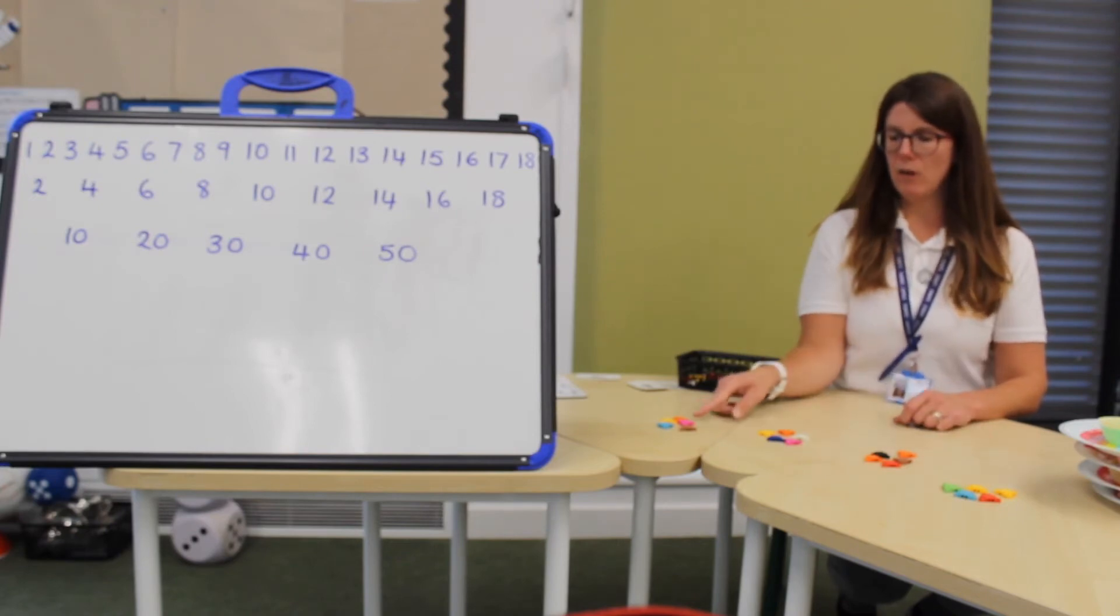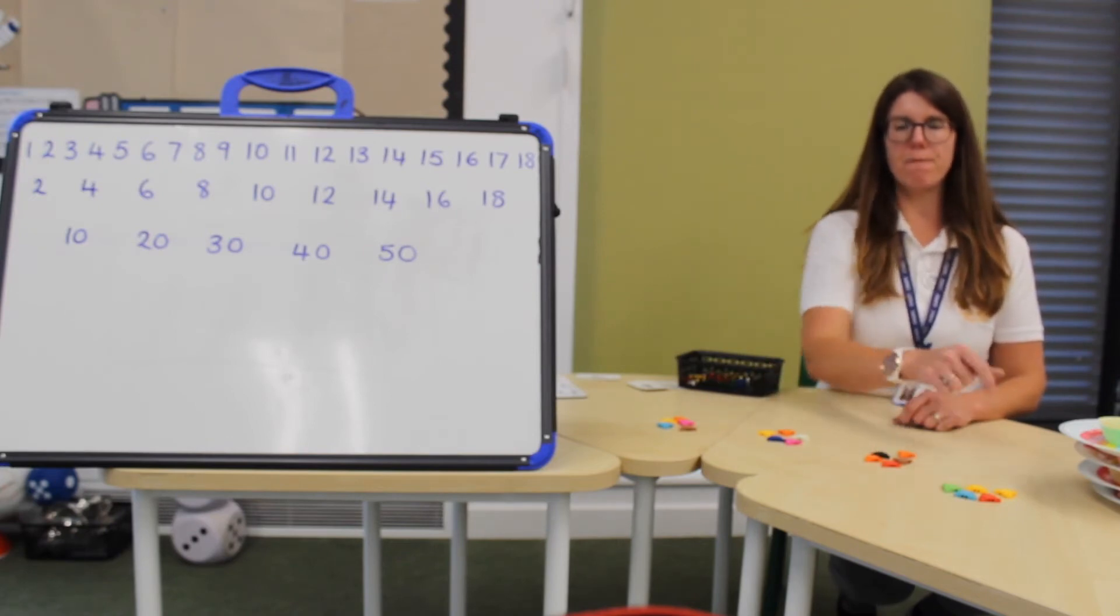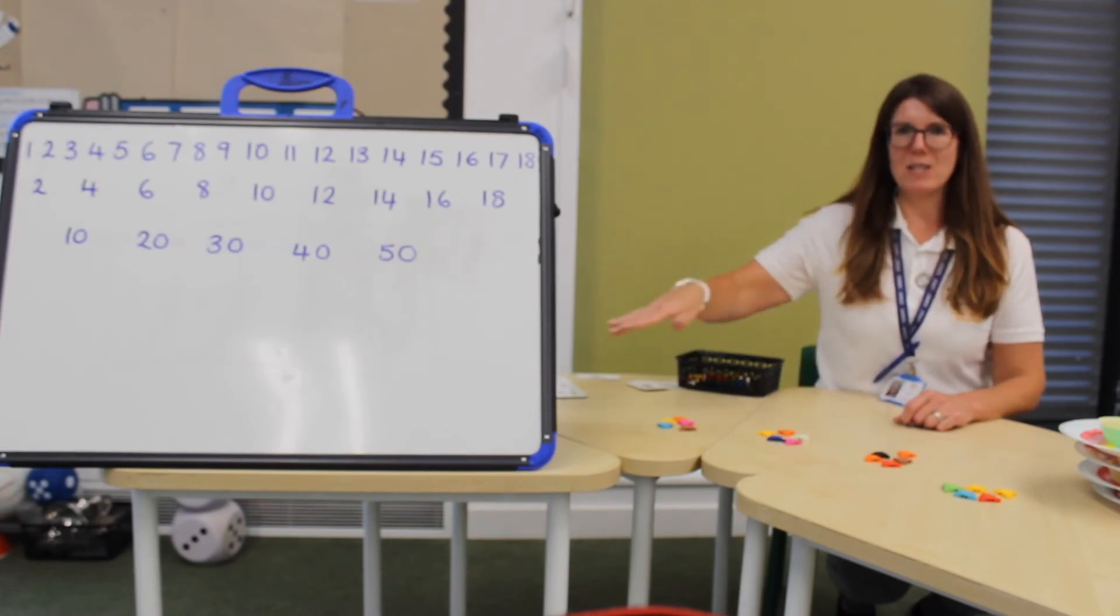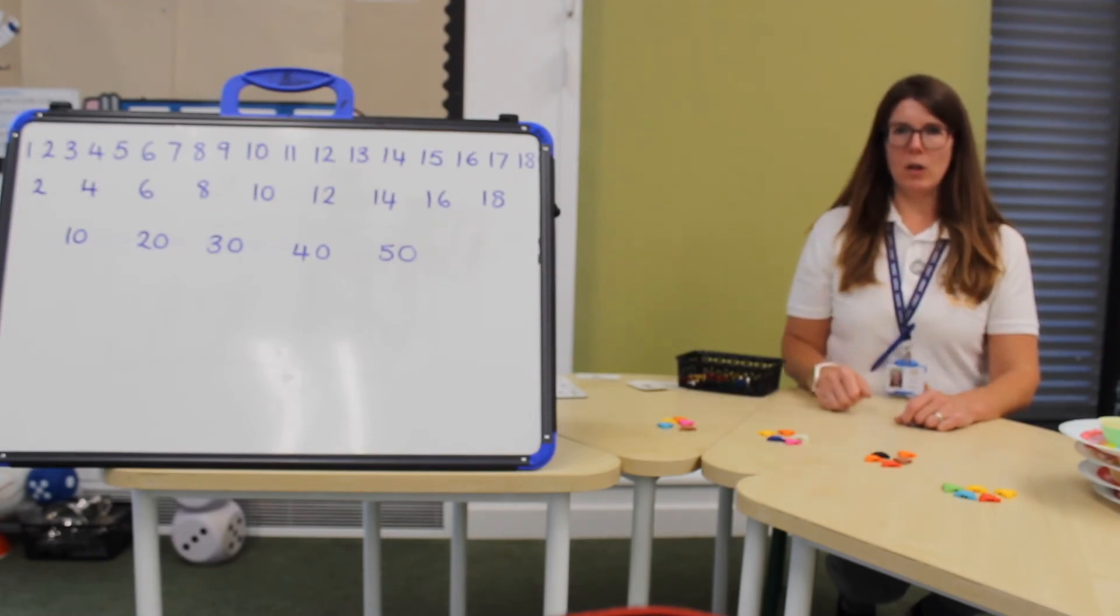So I have twenty divided into groups of five. I have one, two, three, four groups of five which makes twenty all together.